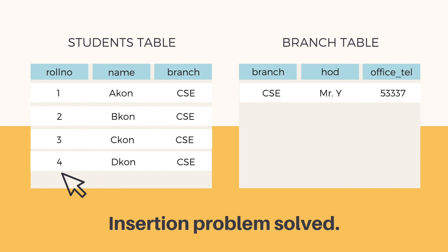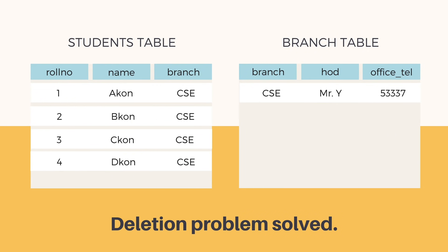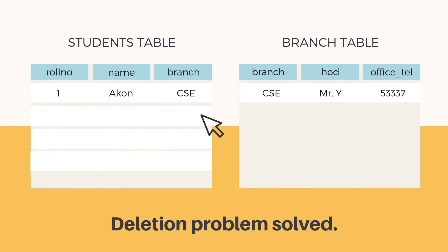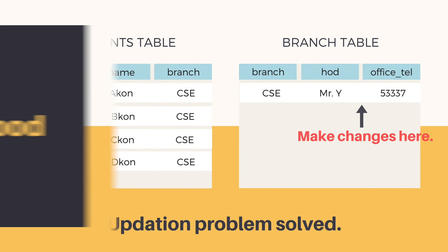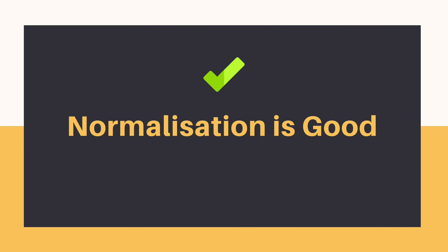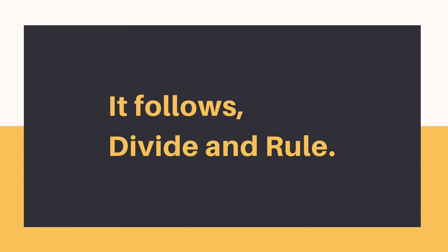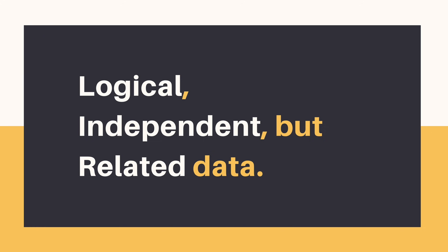Let's see how the problems are solved. To insert a new student, we only enter the roll number, student name, and branch name — the branch information is stored separately and doesn't need to be repeated. To delete student records at the end of a session, we can delete all student records while still retaining the branch information in its separate table. And if we have to update the HOD name or department phone number, we just do it in one place. Normalization solves these problems by dividing data into separate independent logical entities and relating them using a common key — in our case, the branch name.